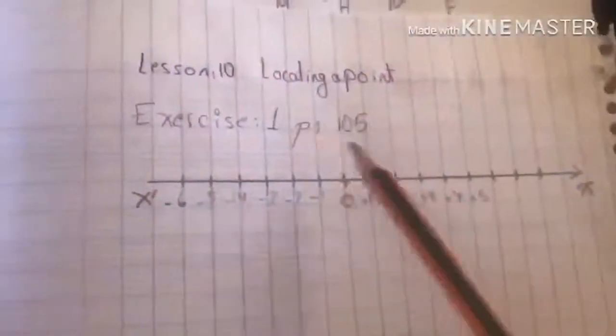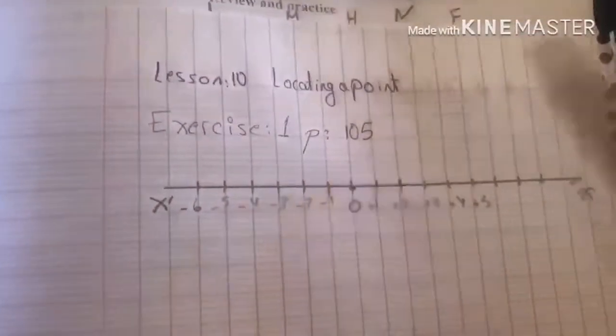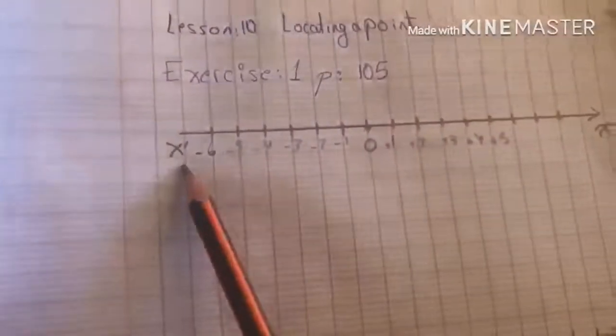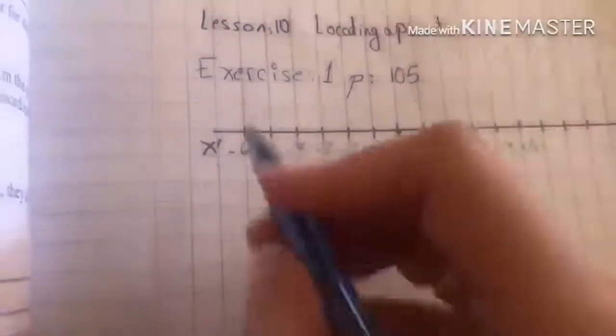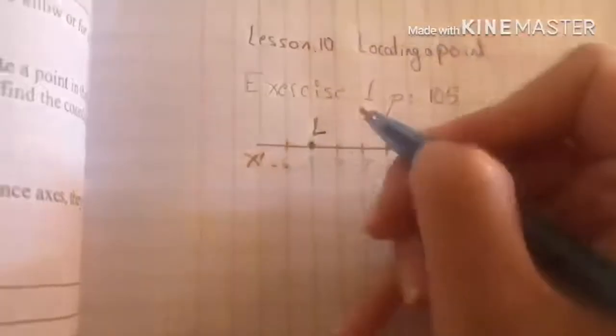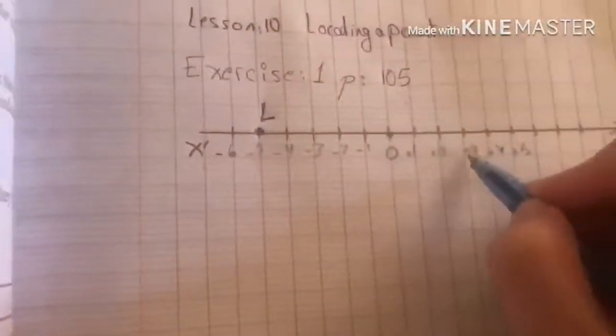Please, we are going to start with exercise number 1, page 105. On the axis X prime O X, we have to locate the points L minus 5, F3, and H minus 1. Please pay attention, in this exercise we just need the x-axis. As you notice here, I already drew the x-axis, the axis of abscissa. L is minus 5, so it is negative. Here you have to put a point. Here it's L. F is 3, positive 3. You can put plus if you want. Here it's F. And H is minus 1. As you notice here.